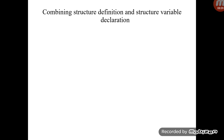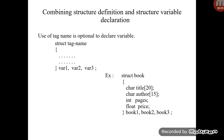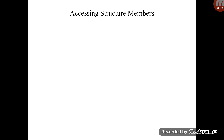You can also combine structure definition and variable declaration together. The tag name is optional — you can directly mention the variable names after the closing brace before the semicolon. For example: `struct book { ... } book1, book2, book3;` — this defines the structure and declares the three structure variables in one statement.